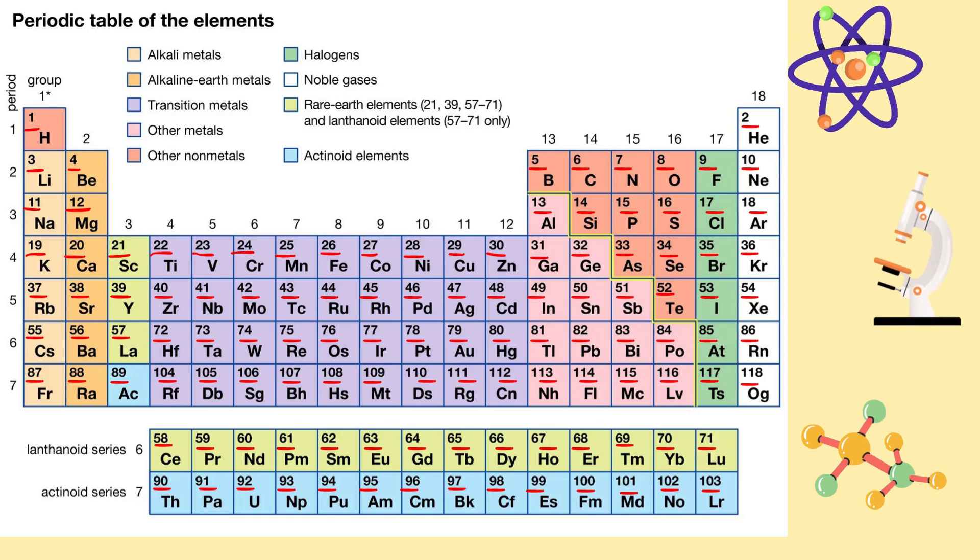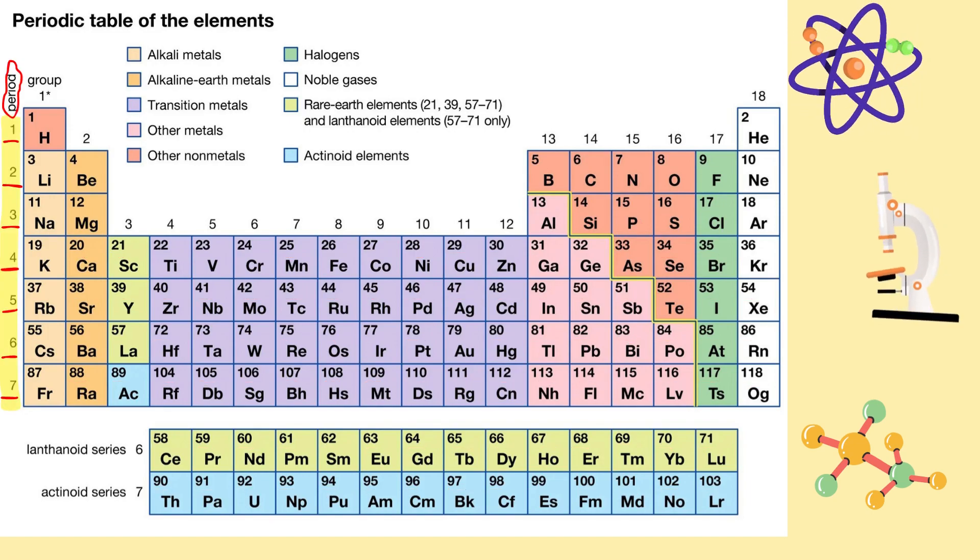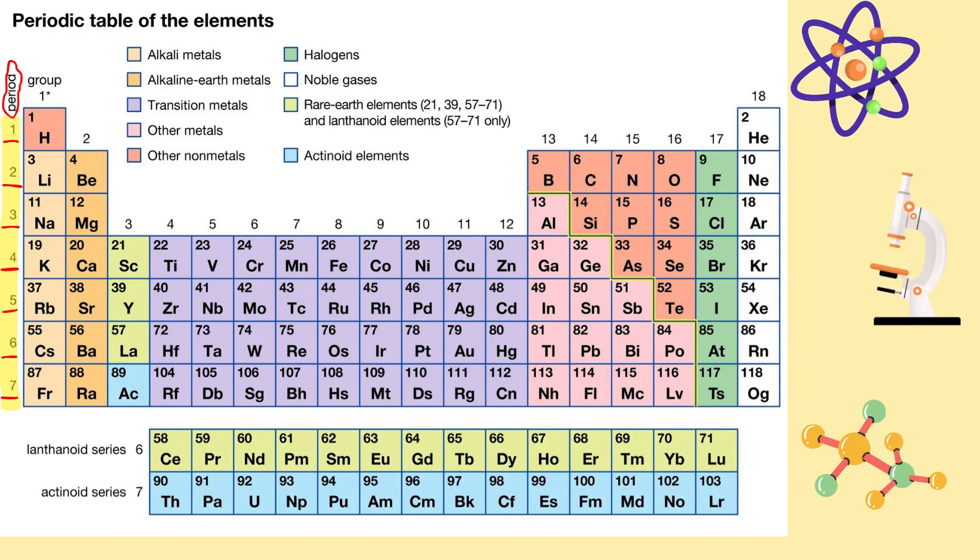Elements are arranged in increasing number of protons, or we can say increasing atomic number. Horizontal rows are also called periods, which show the same number of shells for the elements. There are seven periods.